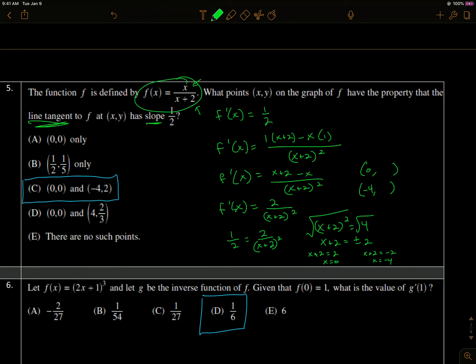So if I plug 0 back into f, f of 0 gets me 0 over 0 plus 2, which is 0. So the points are (0, 0) and (-4, 2).